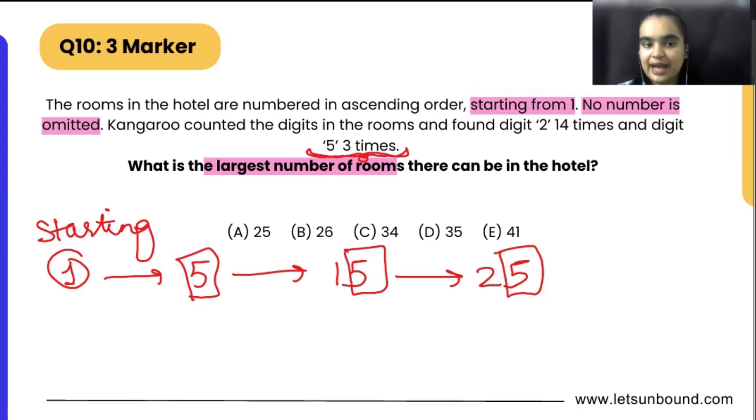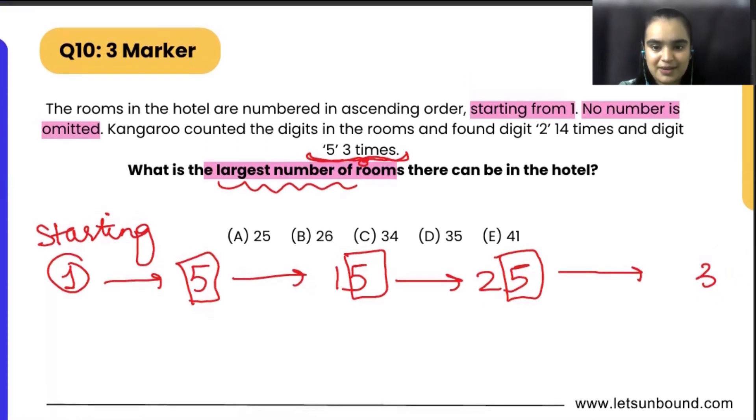Because they have mentioned Kangaroo counted the digits and digit 5 occurs 3 times exactly. And they are asking us the largest number of rooms. So we cannot go to 35 because if we go to 35, then 5 digit will occur 4 times. But can we say that there are 34 rooms?